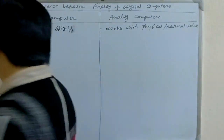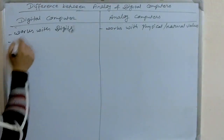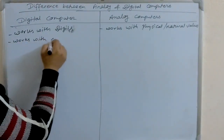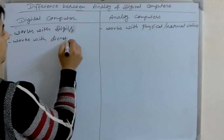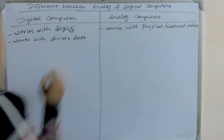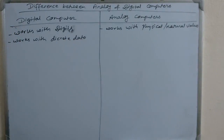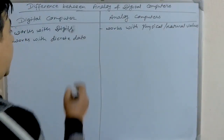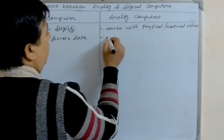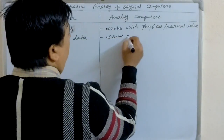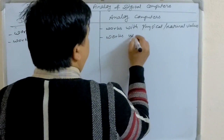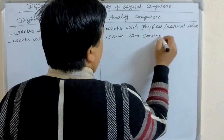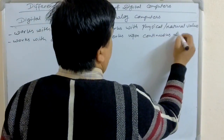The next point is, digital computers work with discrete data. And analog computers work upon continuous data.